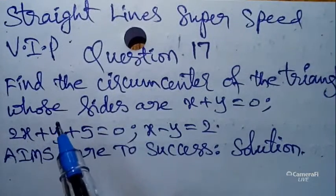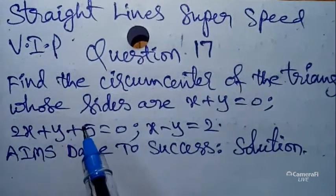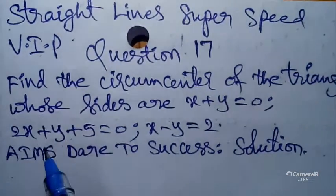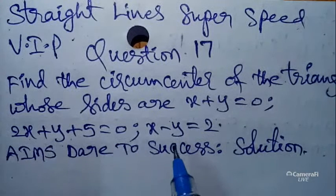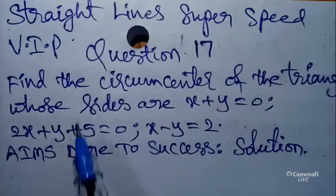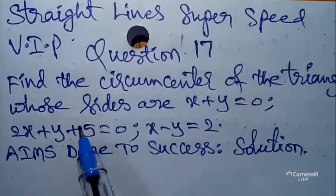Today our question is: find the circumcenter of the triangle whose sides are x + y = 0, 2x + y + 5 = 0, and x - y = 2. Aims dare to success — don't worry about mathematics, just come with me through the straight lines chapter circumcenter model question.